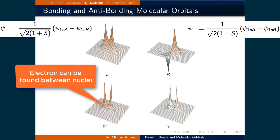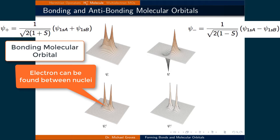What this means is that the electron can be found between the two nuclei in psi plus, and because bonding represents a sharing of electrons, we call psi plus a bonding molecular orbital.